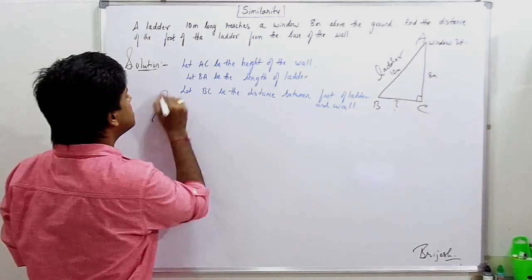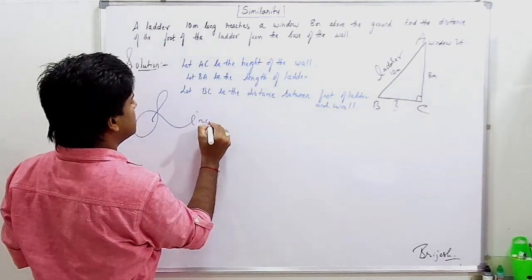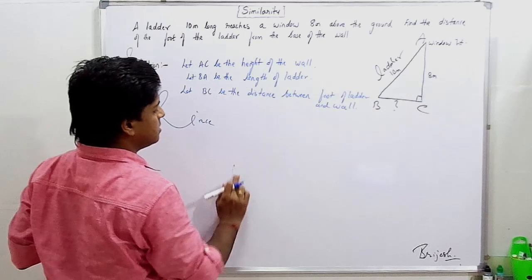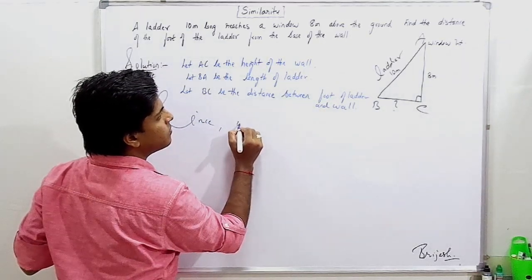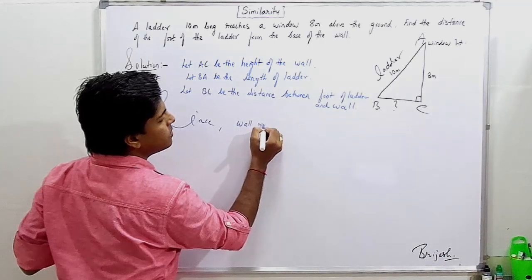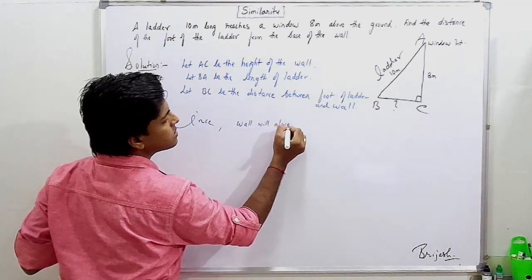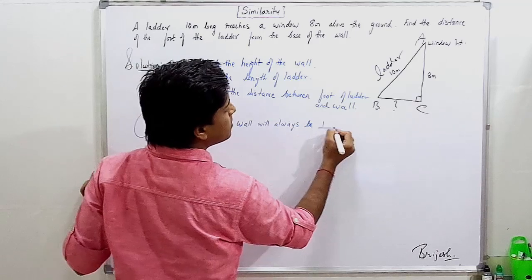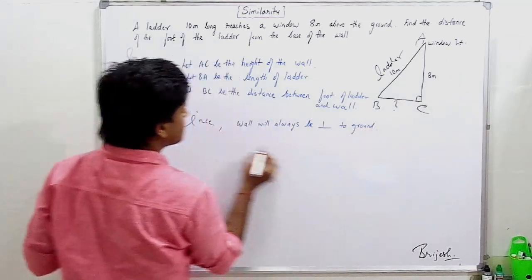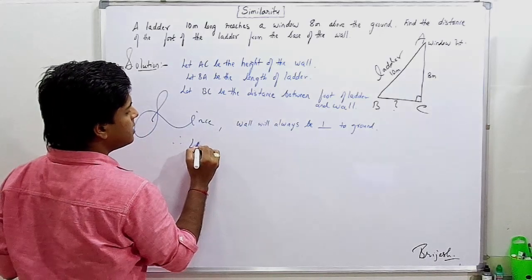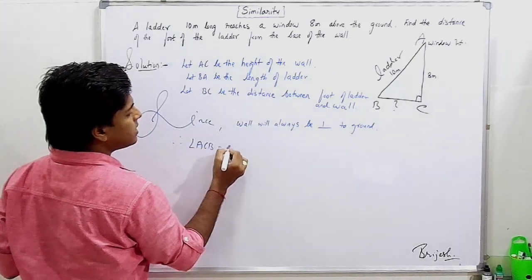Since wall will always be perpendicular to ground, angle ACB equals 90 degrees.